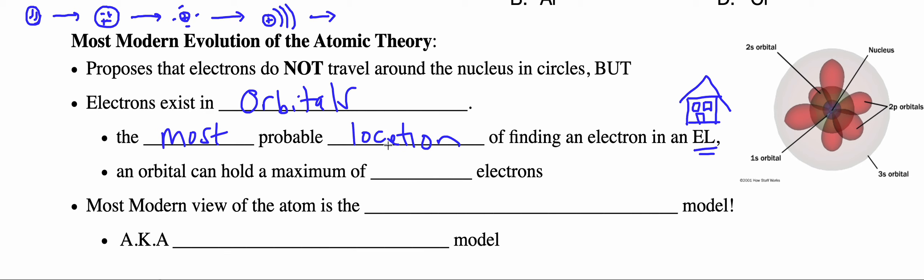The most probable location of finding a person sleeping in their house would be that orbital. You would expect to find them in a bedroom. So orbitals is like that specific region or room in a house where we would expect to find an electron.